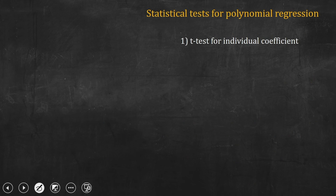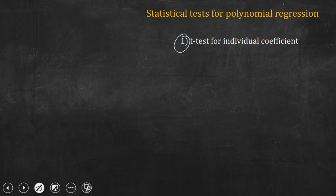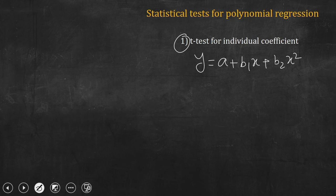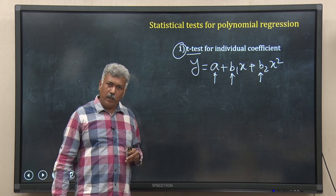Now, suppose I have done the polynomial regression. I want to check the quality of the regression. In case of linear regression, we used statistical tests — T-test and ANOVA — and all those techniques can be used here. For example, using the T-test, I can test the significance of each coefficient separately. If I have done regression for a quadratic equation y = A + B1·x + B2·x², I can use the T-test to check the significance of A, B1, and B2.